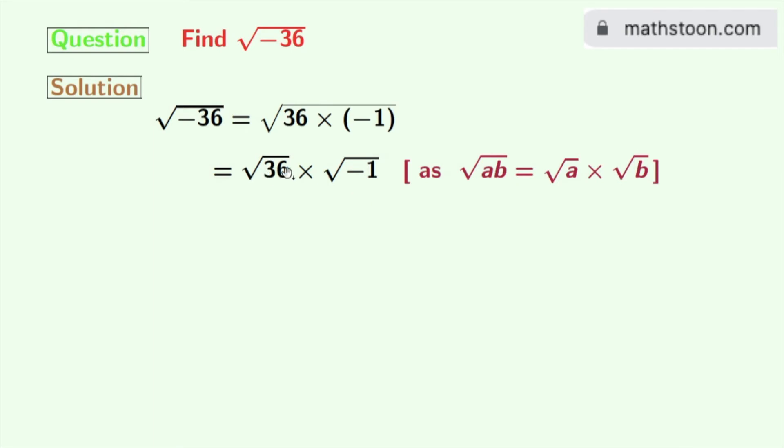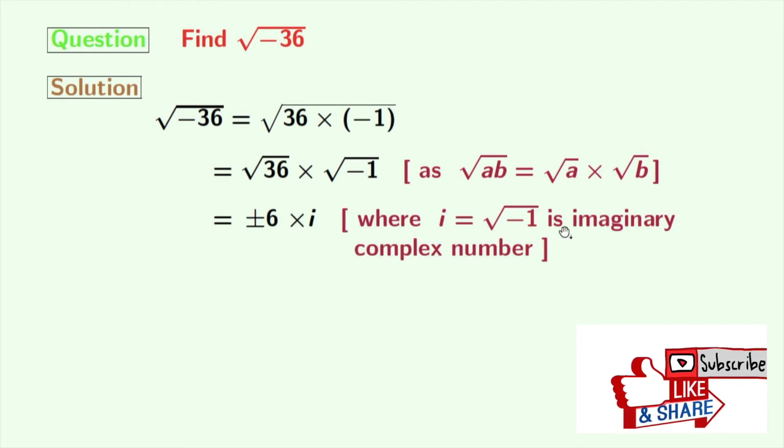Now as root over 36 is plus minus 6, so we have it and square root of minus 1 is i. Well, i is an imaginary complex number and its value is root over minus 1.